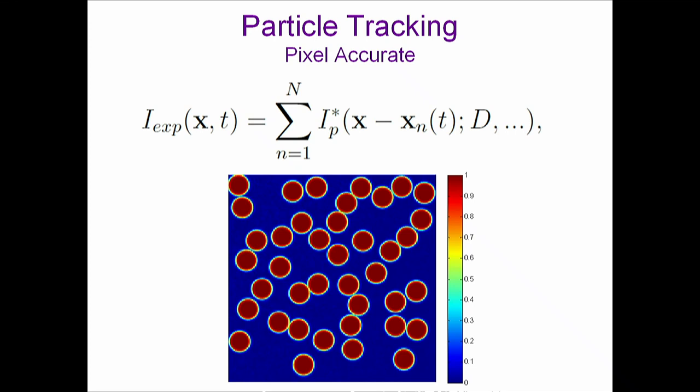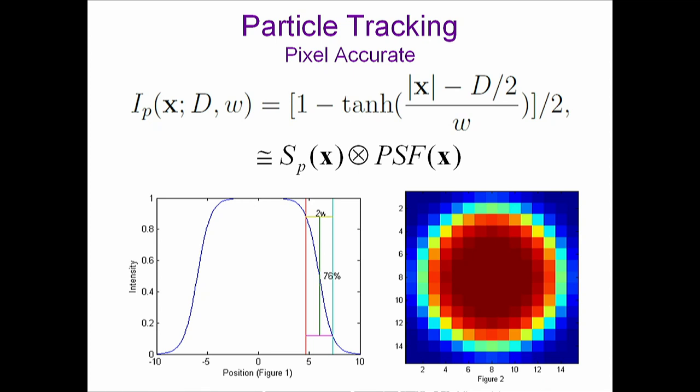Now, once we have this nice image, how are we actually going to track the particles? We're going to use the same idea of least squares fitting we talked about earlier. The idea is that we can write down an actual mathematical formula for this image - it will be the sum over every particle of an ideal particle picture, so we need a mathematical expression for a single particle image.